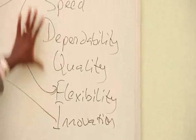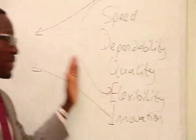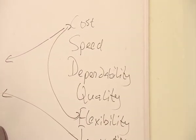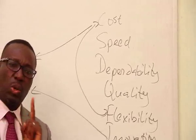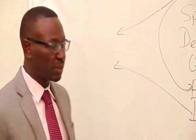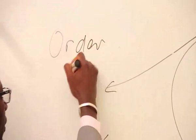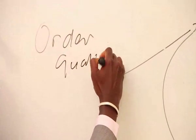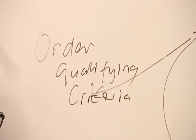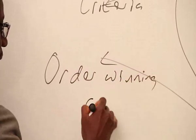Why do we focus on these operations objectives? Because they relate to exactly what the customers require. What customers require, we can divide into two key factors. The first one is known as order qualifying criteria, and the second one is known as order winning criteria.